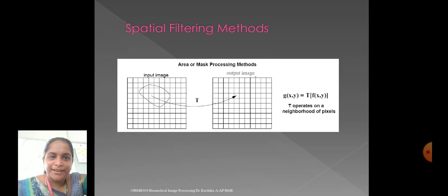Here we can take an input image and the area or mask processing methods. We can mask a certain area or region by using the Spatial Filtering Techniques. And after that, we can get the output image with required Spatial Filtering Output. Here, the formula is G of X, Y is equal to transfer function of F of X, Y. F of X, Y is obviously your input image and G of X, Y is your output image. Here, T operates on a neighborhood of pixels with the help of Spatial Filtering Techniques.